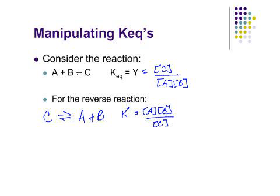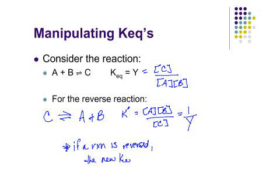In other words, this is the inverse of what we saw before. It's the reciprocal. It's 1 over Y. So if you reverse the reaction, the KEQ will be the reciprocal of the previous KEQ. Is that too hard? Where this gets tricky is when they start putting different manipulations together. But if you know what each manipulation does, you can put the pieces together. If a reaction is reversed, the new KEQ is the reciprocal of the original KEQ.